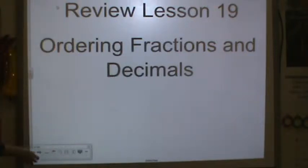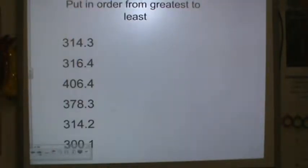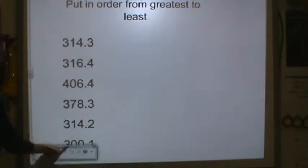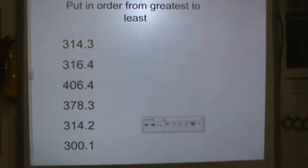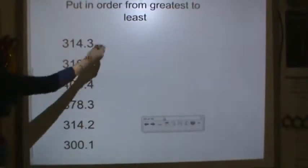This is review lesson 19. We're going to talk about ordering fractions and decimals. So when putting decimals in order from least to greatest, what we do is we start at the place value furthest to the left. So we're putting them greatest to least.